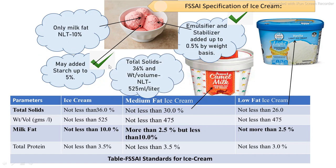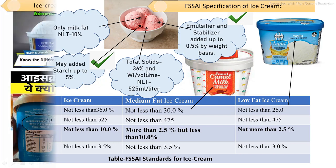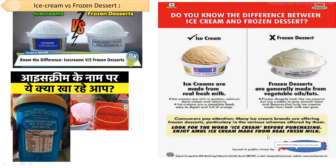The total solid content of the final ice cream product must be at least 36%. The key difference between ice cream and frozen desert is the source of fat. Real ice cream must be prepared using milk fat, while in frozen desert the main source of fat is vegetable oil. The basic difference is only in the source of fat used — remaining other ingredient and processing steps are the same.